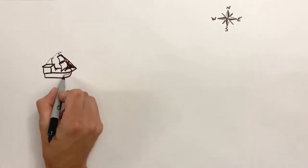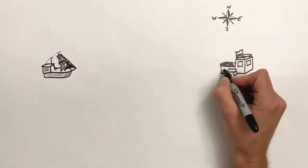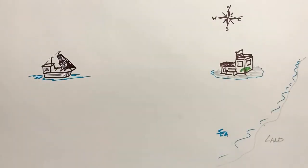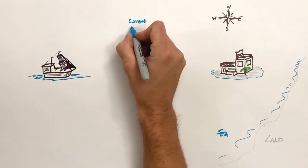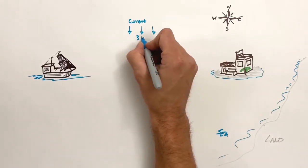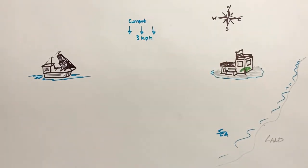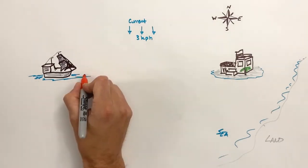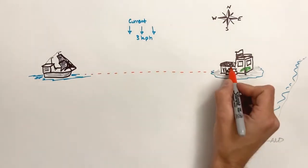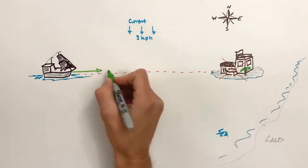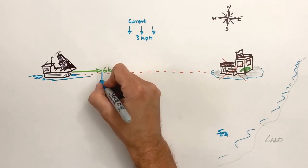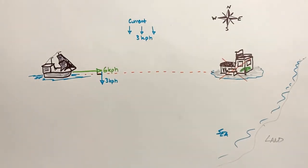In hopes of stealing the mythical treasure of Newton, the black-sailed pirate ship, the Vector, is going to sail due east across the seven seas to the fortress guarding that treasure. There's a current in the ocean moving south at 3 kilometers per hour. If the ship sails due east, it should arrive at the fortress. However, the ocean current is flowing due south, so as the ship tries to move east, the current is going to sweep the ship south. The first thing we're going to do is figure out how fast and in what direction the ship is actually going to travel.